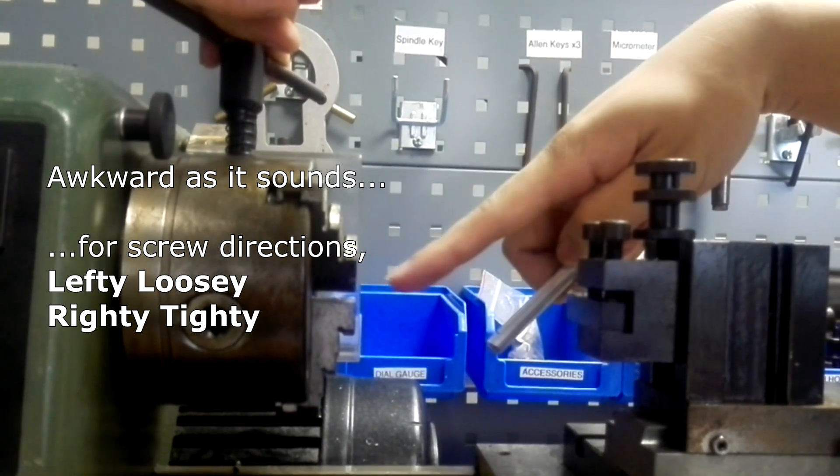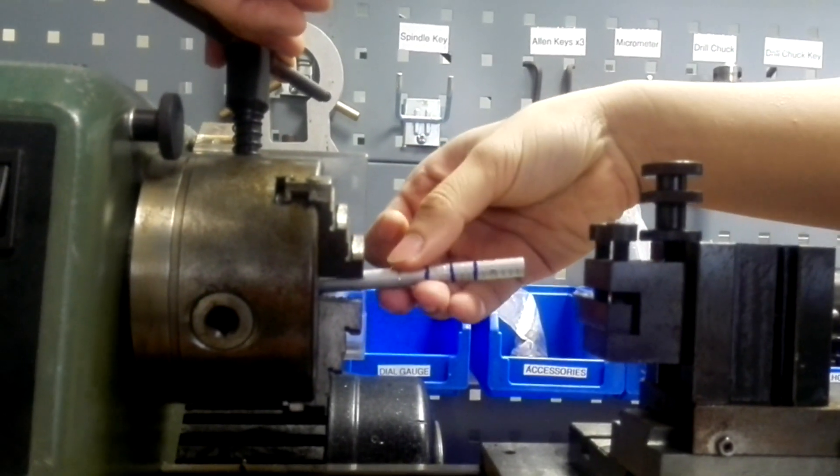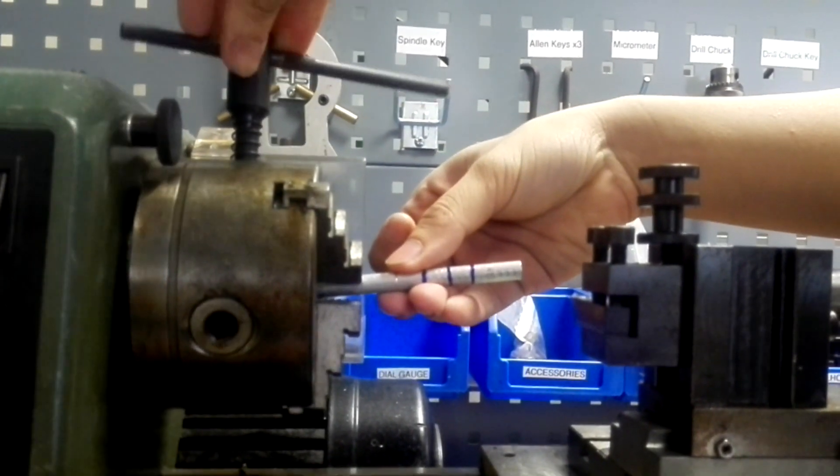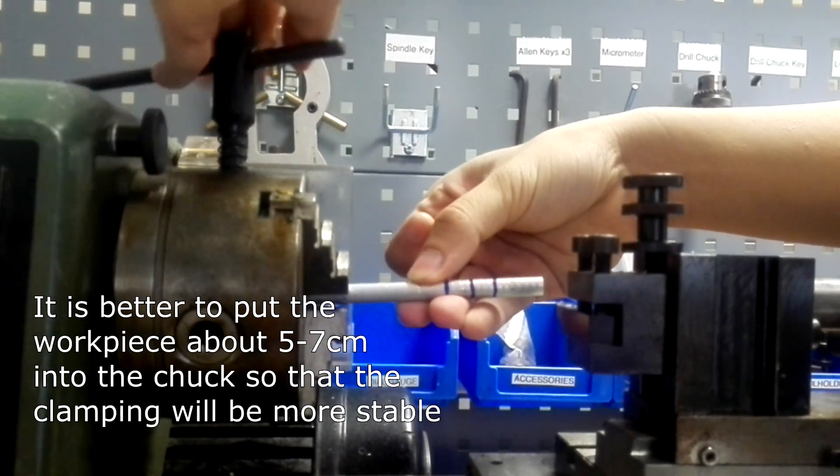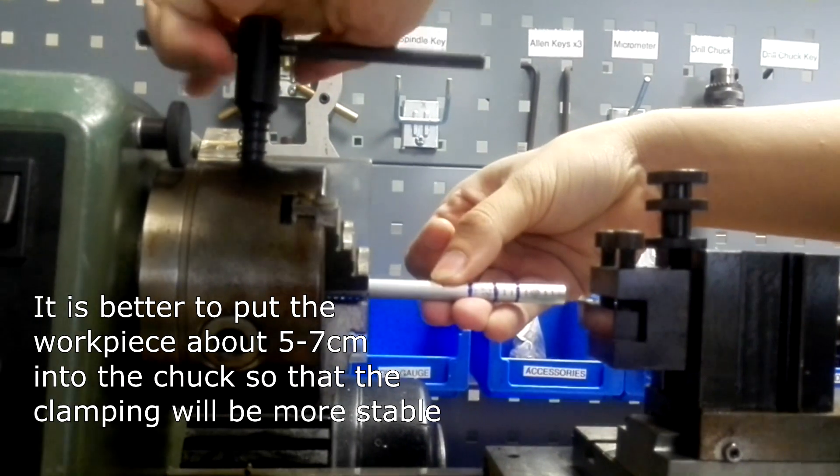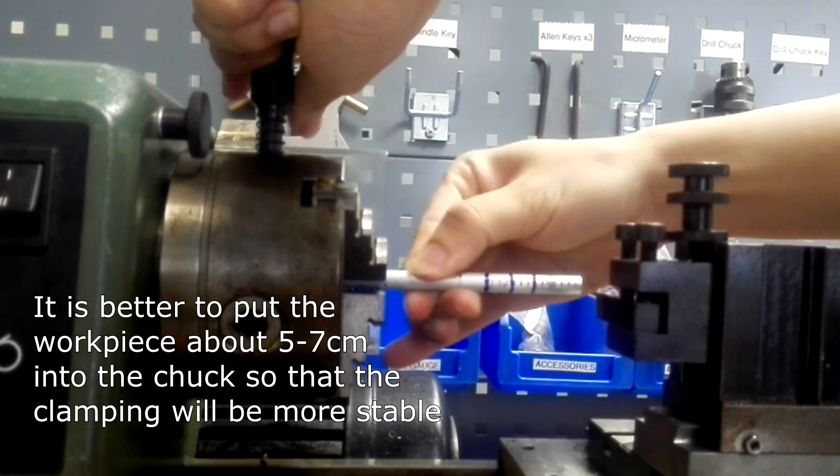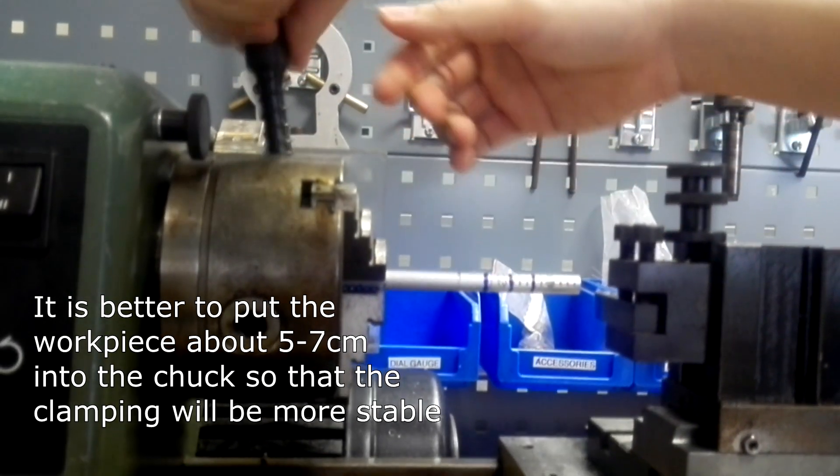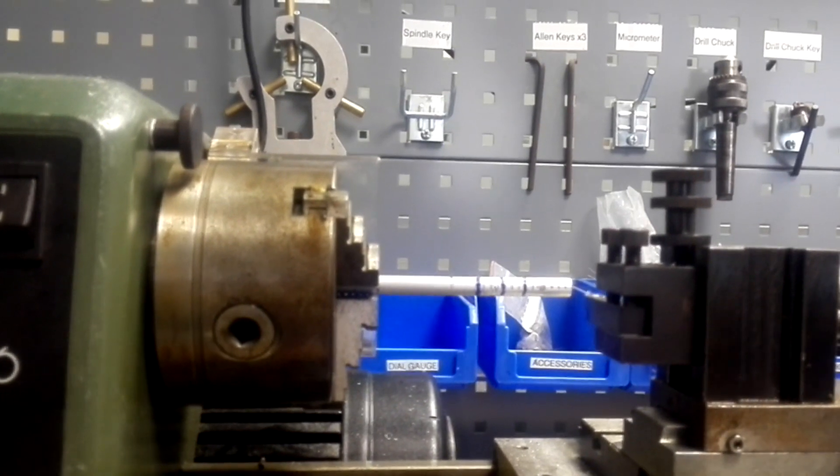Now that the chuck is open, you can place your workpiece inside and tighten. This looks secure. Remove the chuck key and then we have it.